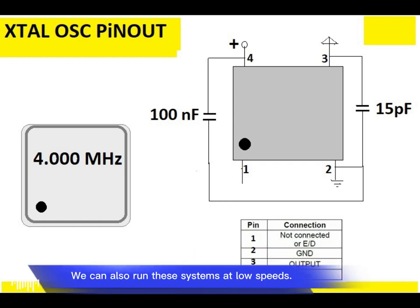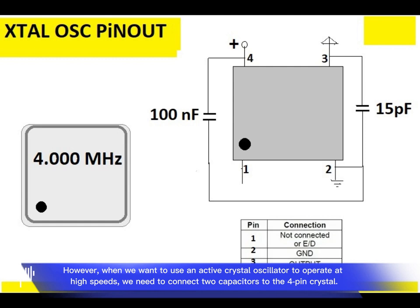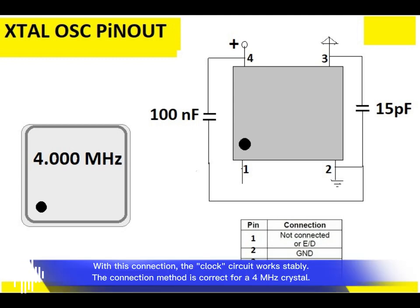We can also run these systems at low speeds. However, when we want to use an Active Crystal Oscillator to operate at high speeds, we need to connect capacitors to the four-pin crystal. With this connection, the clock circuit works stably.